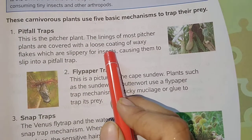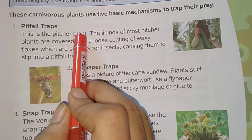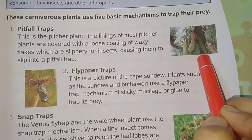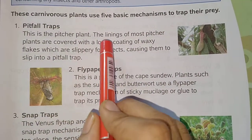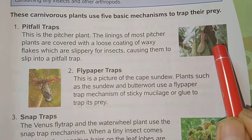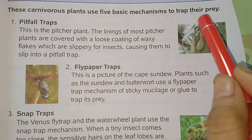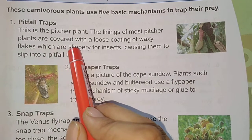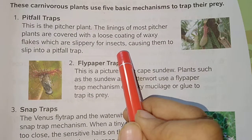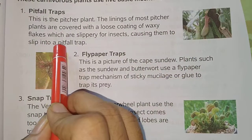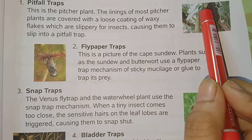First of all, the pitfall trap. This is a pitcher plant, which you can see in your book. The lining of the pitcher plant is covered with a loose coating of wax. The flakes are large and waxy, which makes them very slippery. When insects try to get out, they slip into the pitfall trap, become trapped, and the plant takes nutrients from them.